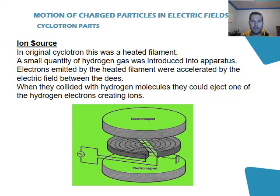First up we have an ion source. Originally this was a heated element that produced electrons. And when the electrons went through the cyclotron, they actually collided with hydrogen. When this hydrogen had the collision with the electrons, an electron from the hydrogen was released, creating hydrogen ions.